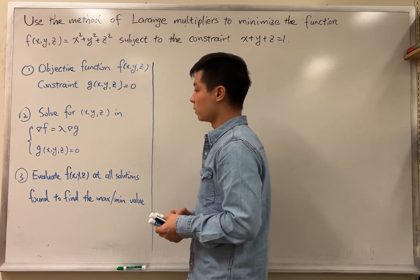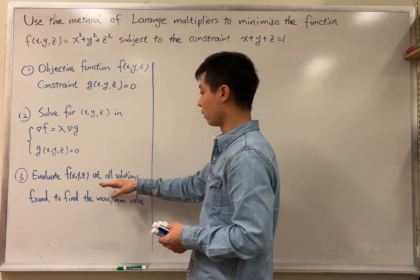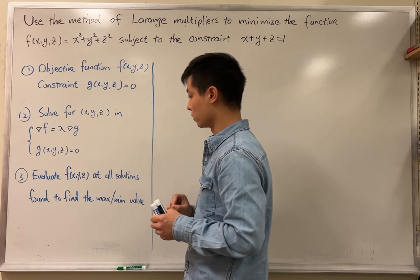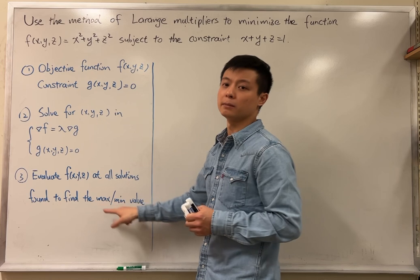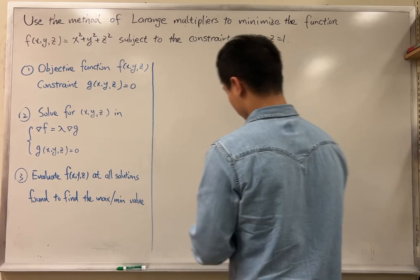Last but not least, we're going to move on to evaluating the objective function at all the solutions found in step two, and then we will compare all the outputs to find out our maximum value and the minimum value. So, let's take a look at how we actually solve it.